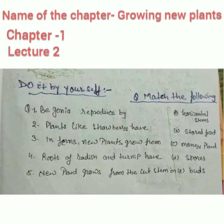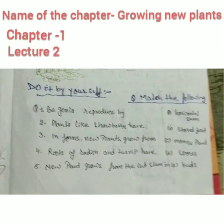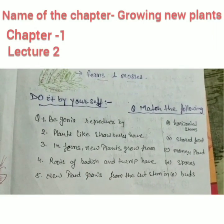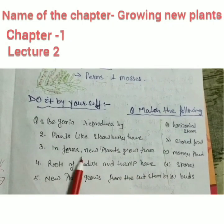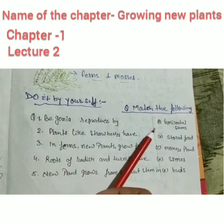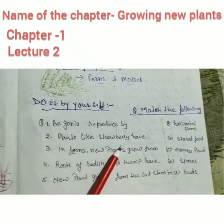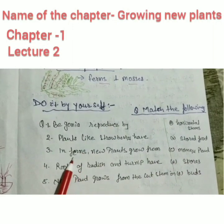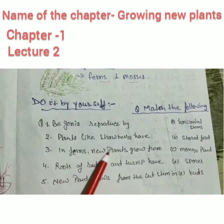Now I am giving you some questions for this second lecture. Match the following: begonia reproduces with the help of which part of the plant? Plants like strawberry have what? In ferns, from what does a new plant grow?